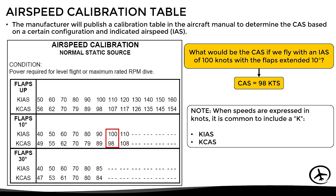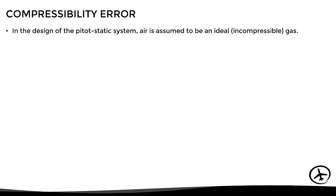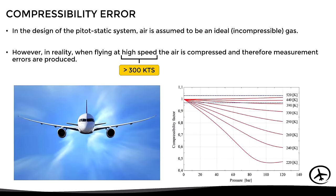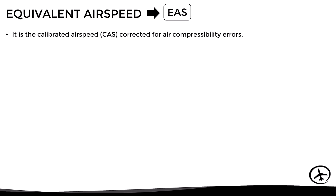The next type of error is the compressibility error. In the design of the pitot-static system, air is assumed to behave as an ideal gas that cannot be compressed. However, when flying at high speeds the air actually compresses, generating errors in airspeed measurement. Compressibility effects become significant above 300 knots, so this error is almost nil in small, slow aircraft. If flying at high speeds, a compensation for air compressibility must be applied, resulting in the equivalent airspeed, abbreviated as EAS — the calibrated airspeed corrected for compressibility errors.